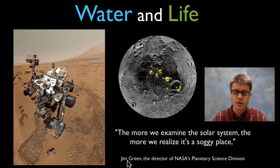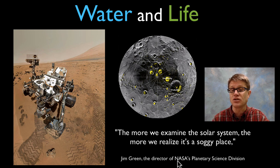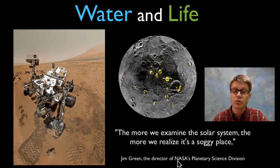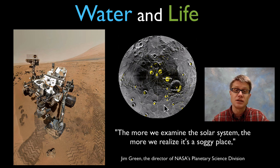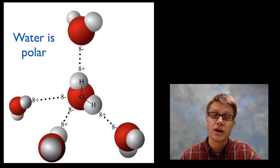This quote from Jim Green, director of NASA's planetary science division, is great: "The more we examine the solar system, the more we realize it's a very soggy place." And what's cool about that is if we can find water out there, there's the idea that we could also find life.